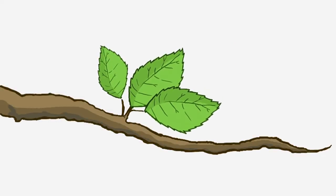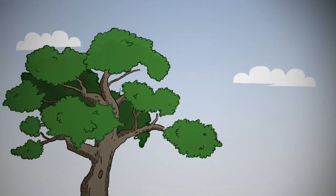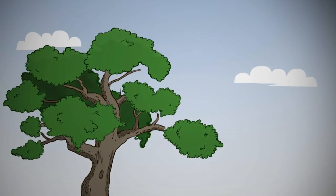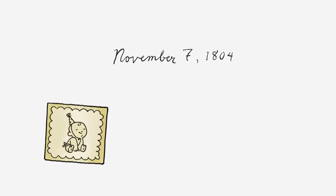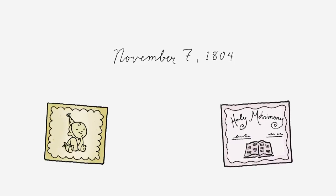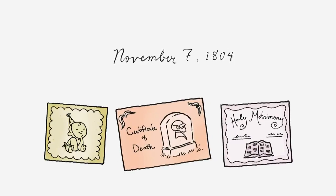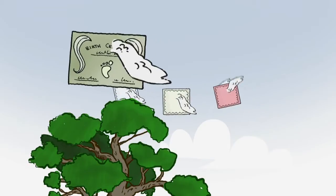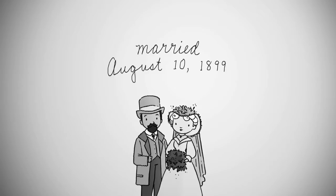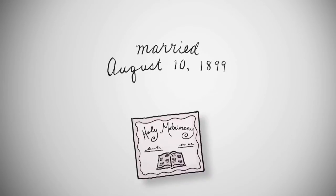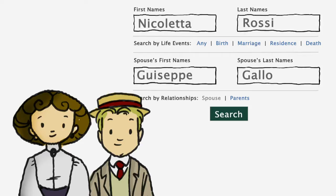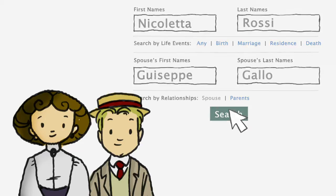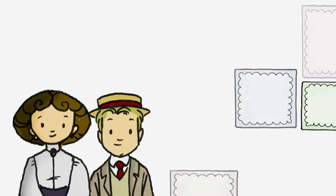Some of the information you're searching for might be found on multiple records. For instance, a birth date may be found on a birth record, a marriage record, or a death record. Other information may only be available on one record — a marriage date will probably only be found on a marriage record. When you search, use the information you know in different combinations to zero in on different historical records.